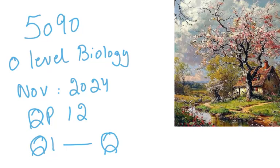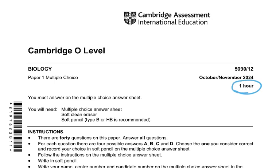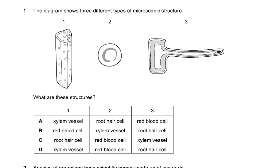Bismillahirrahmanirrahim. This is the 5090 November 2024 question paper, and we'll discuss questions 1 through 20 or so. Question number 1: the diagram shows three different types of microscopic structures — 1, 2, and 3. Structure 3 is a root hair cell, 2 is a red blood cell, and 1 is xylem. So the answer to question 1 is D.